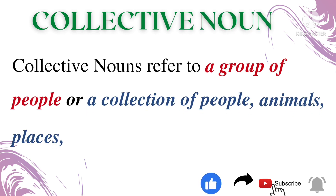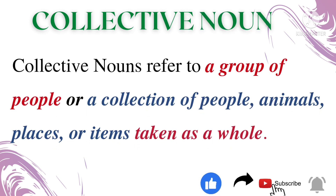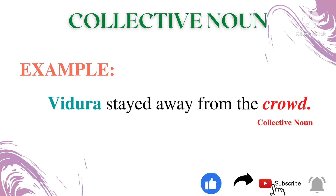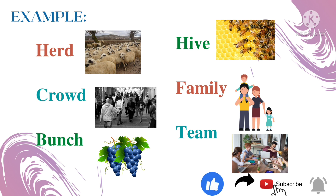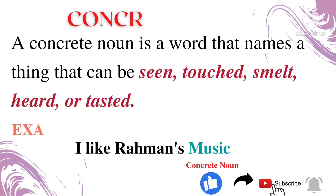What is a collective noun? Collective nouns refer to a group or collection of people, animals, places, or items taken as a whole. Example: 'Vidura stayed away from the crowd' — here 'Vidura' is a proper noun and 'crowd' is a collective noun. More examples: herd, crowd, bunch, family, team — all these words are collective nouns.